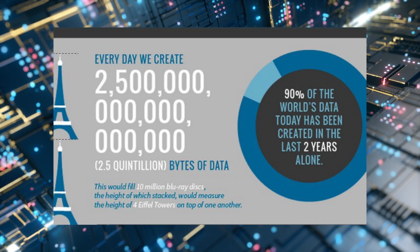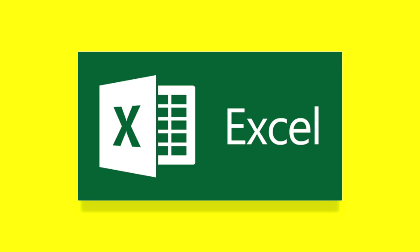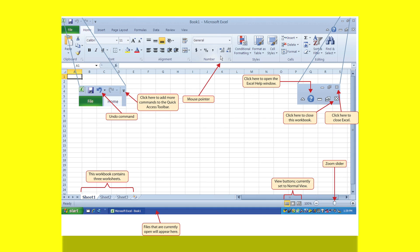That's 2.5 followed by 18 zeros. Now before we had technologies, we used to store our data differently — into papers and files. But if we wanted to find something, it got really difficult. So after that, computers came and we started storing our data into computers, using different software such as MS Excel.